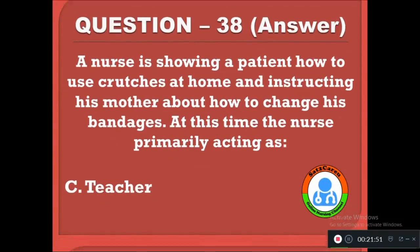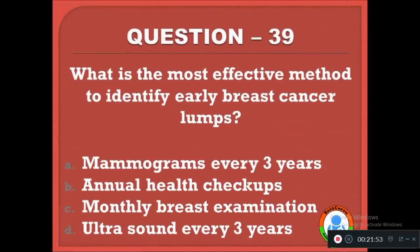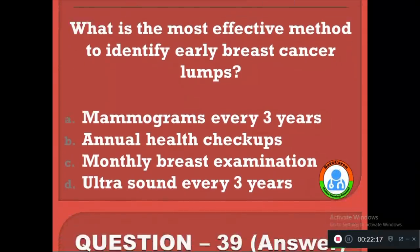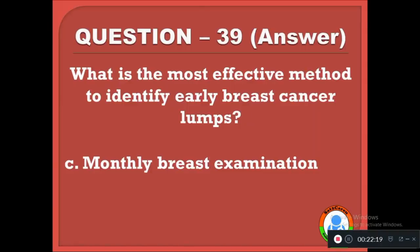Question 39: What is the most effective method to identify early breast cancer lumps? Option A: mammograms every 3 years, B: annual health checkups, C: monthly breast self-examination, D: ultrasound every 3 years. The correct answer is C, monthly breast self-examination done by a woman can easily identify any breast cancer related lumps.